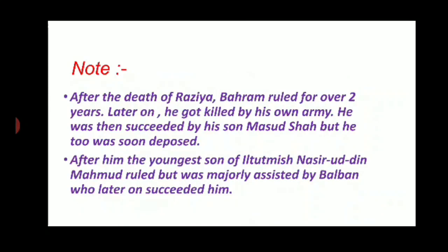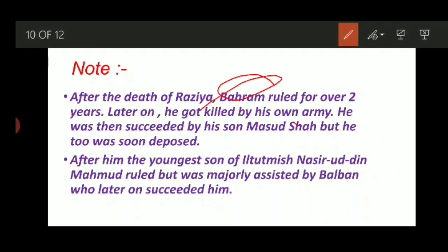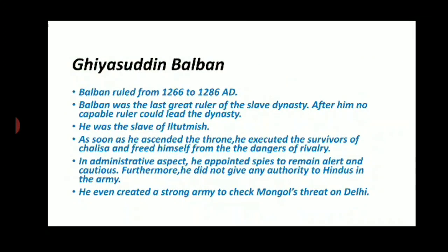After Razia, there was a lack of strong leadership in the Slave dynasty. After her death, Behram ruled for over two years, then got killed by his own army. He was succeeded by Masood Shah, but he too was soon deposed. We see coming up of very weak rulers, after which Balban came. Nasir-ud-Din Mahmood, the youngest son of Il-Tutmish, also ruled but was majorly assisted by Balban, who later succeeded him.